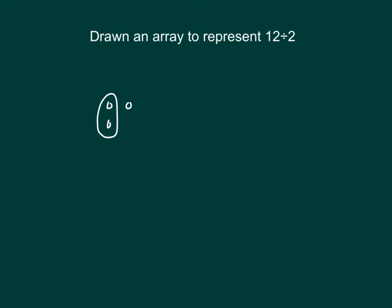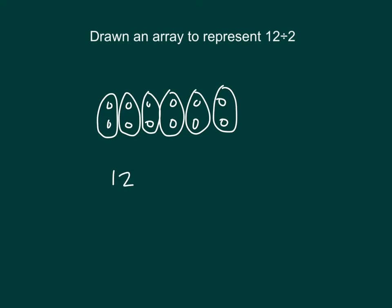There's 2, 4, notice we're putting 2 within each of those groups, 6, 8, 10, 12. So there's 1, 2, 3, 4, 5, and 6, so that our equation is 12 divided by 2 equals 6.